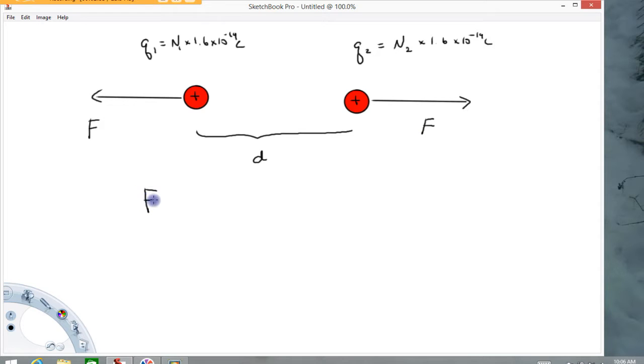It says that the force between two particles is directly proportional to each charge. So I'll put charge one and charge two. And it's inversely proportional to the distance squared. So basically, that means that the force is directly proportional to the product of q1, q2 over d squared. And again, this is a symbol for what's called direct proportionality.